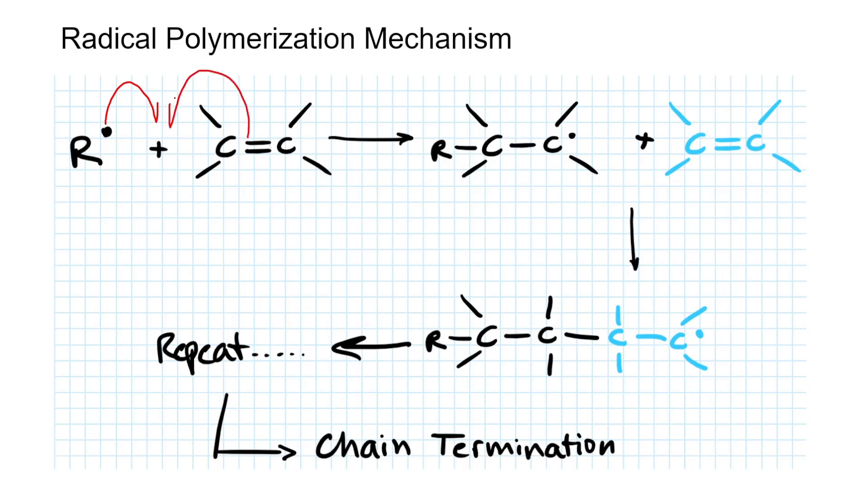Pay close attention to the type of arrow I'm drawing. These half-head arrows imply this is a radical mechanism. Remember, typically in organic chemistry we see arrows that imply two electrons are moving. When we draw these half arrows, this means only one electron is moving.